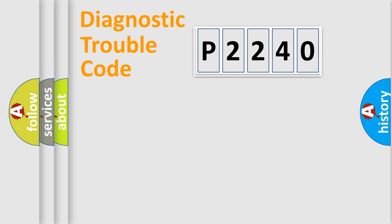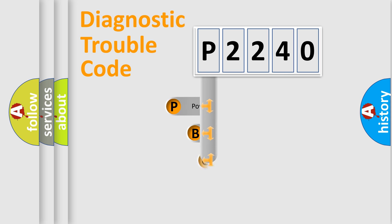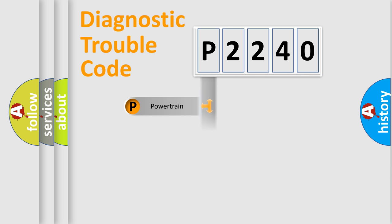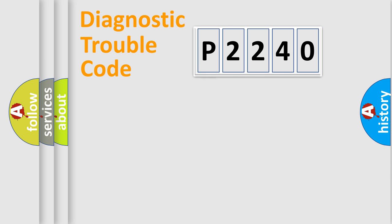Let's do this. First, let's look at the history of diagnostic fault code composition according to the OBD2 protocol, which is unified for all automakers since 2000. We divide the electric system of an automobile into four basic units: Powertrain, Body, Chassis, and Network. This distribution is defined in the first character of the code.